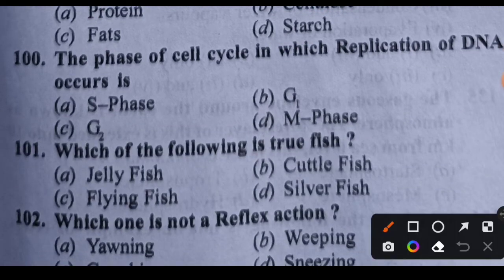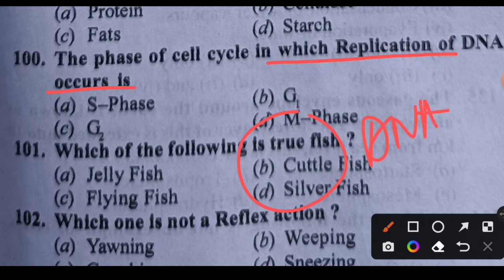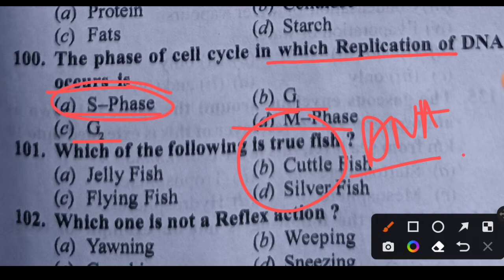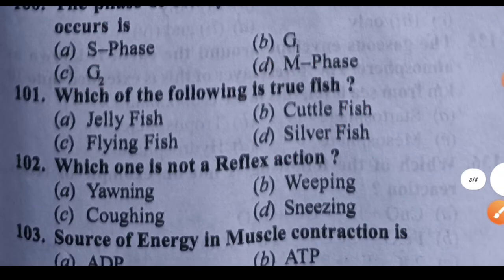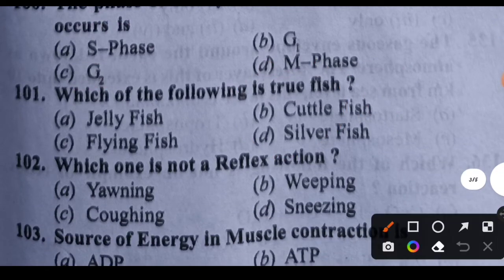Question 100: The phase of cell cycle in which replication of DNA occurs is which phase? Options: S phase, G1 phase, G2 phase, or M phase. DNA replication occurs in the S phase. Option A is the right answer.